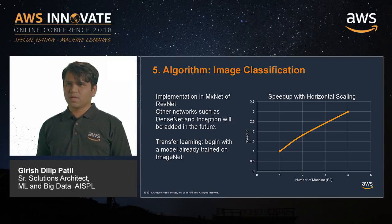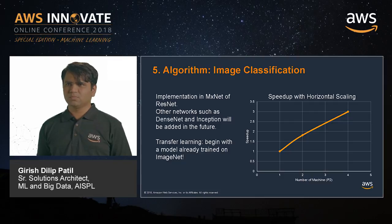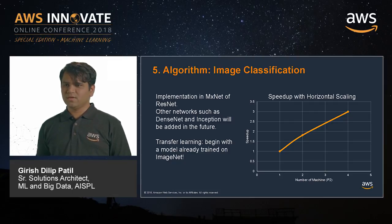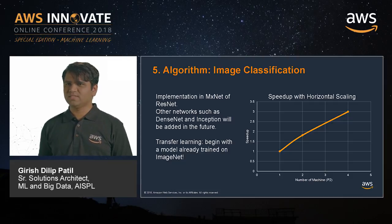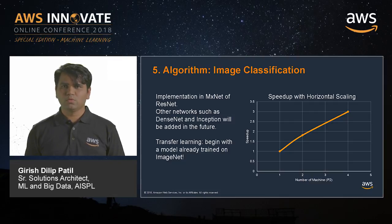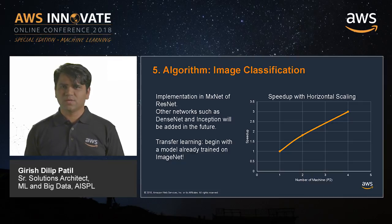The next important algorithm is Image Classification. This is a very popular problem because if you can classify images you can achieve so many things. The current state-of-the-art results in image classification, which even exceed human capabilities, have been made possible through deep learning. SageMaker's image classification algorithm uses deep learning and provides one of the most successful network architectures — ResNet. You can change the size of the network and train from scratch without needing to know a ton of deep learning.